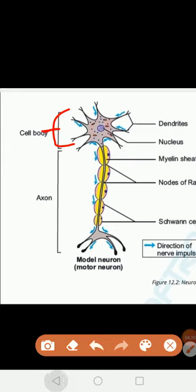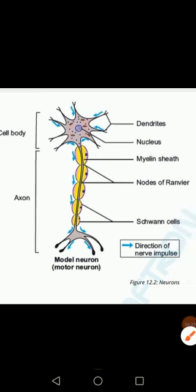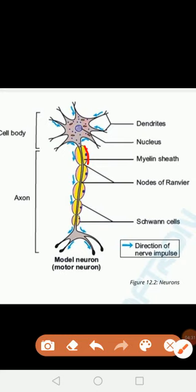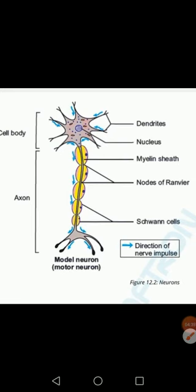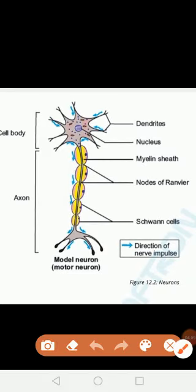On the axon there are special neuroglial cells called Schwann cells, present at regular intervals along the axon. In some neurons, these Schwann cells secrete a fatty layer which is called the myelin sheath, which forms a fatty covering on the axon.